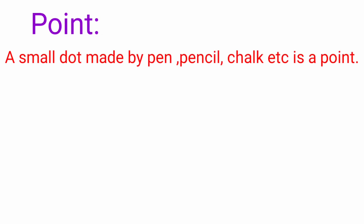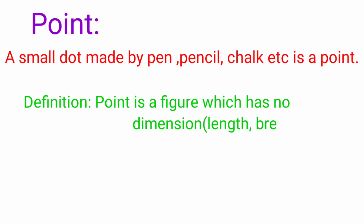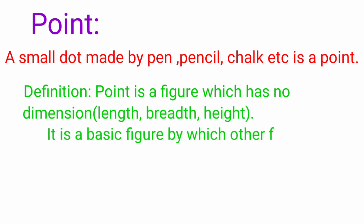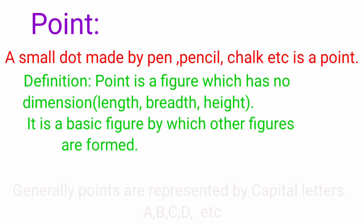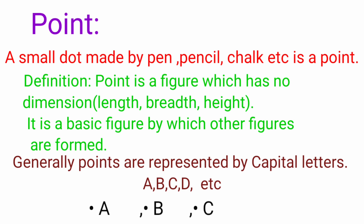A small dot made by pen, pencil, or chalk is a point. Definition of point: a point is a figure which has no dimension — no length, breadth, or height. It is a basic figure by which other figures are formed. Generally, points are represented by capital letters A, B, C, D, etc. Three points A, B, C are shown in the figures.